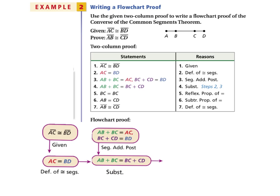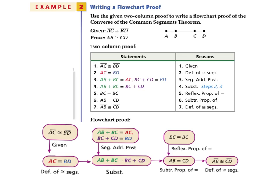For steps five and six: we can say anything is congruent to itself through reflexive property of equality. In step four we have the equation AB plus BC equals BC plus CD. Since BC equals itself on both sides, we can subtract BC from both sides, which cancels the BCs and leaves AB equals CD — by subtraction property of equality. Finally, by definition of congruent segments, since the two lengths are equal, we say segment AB is congruent to segment CD.